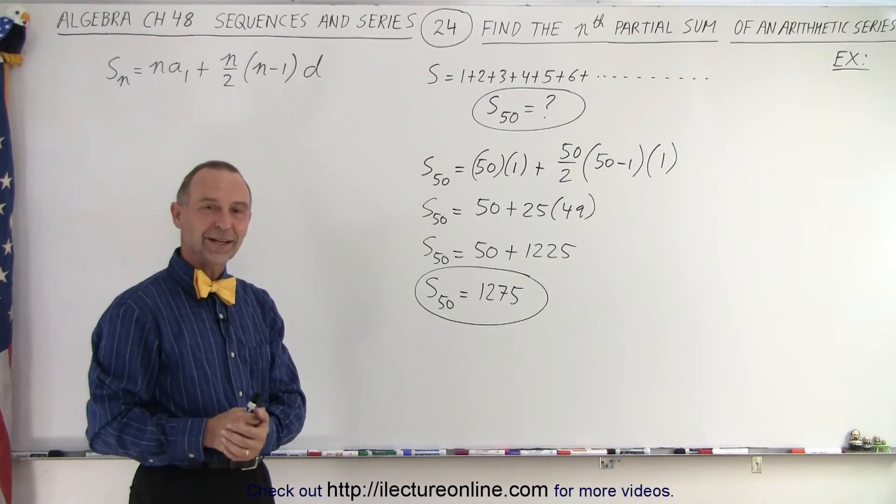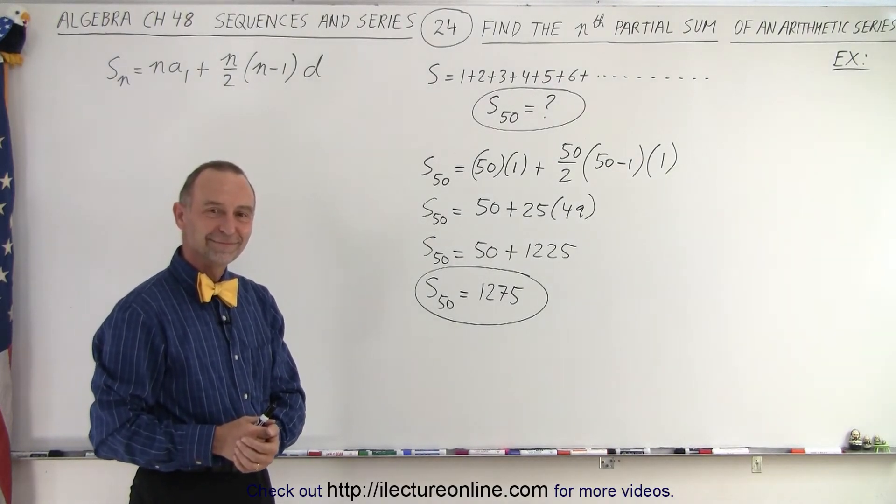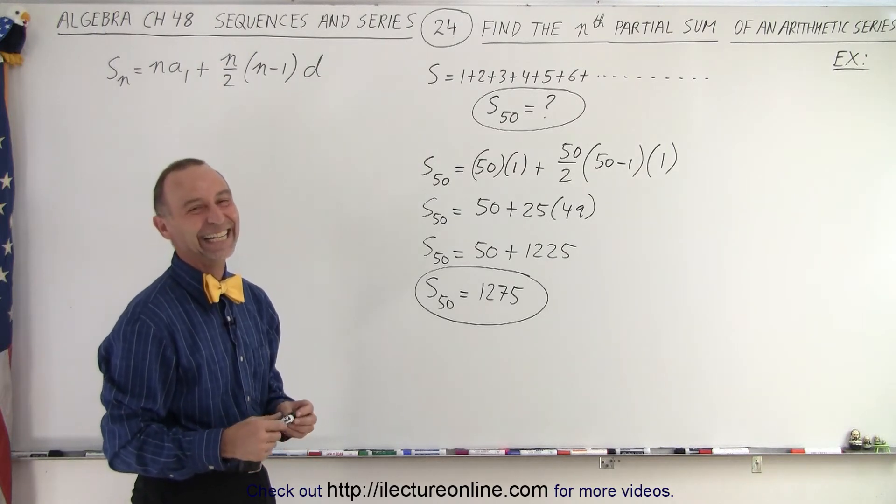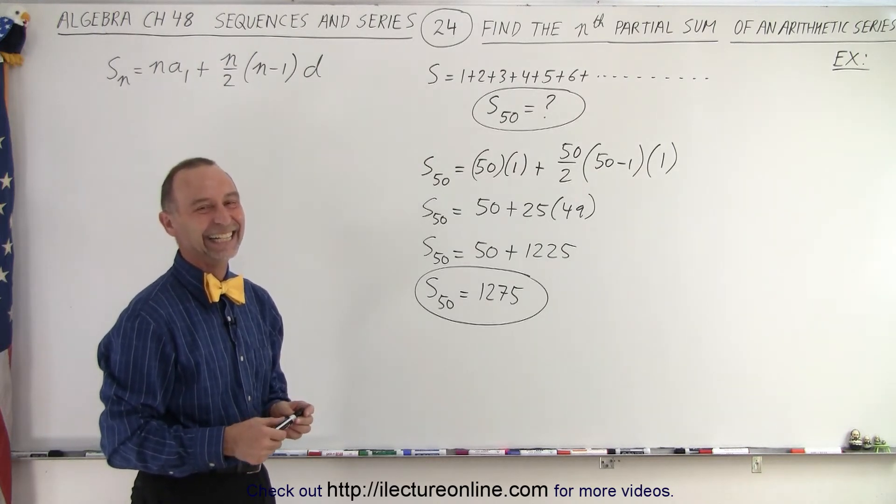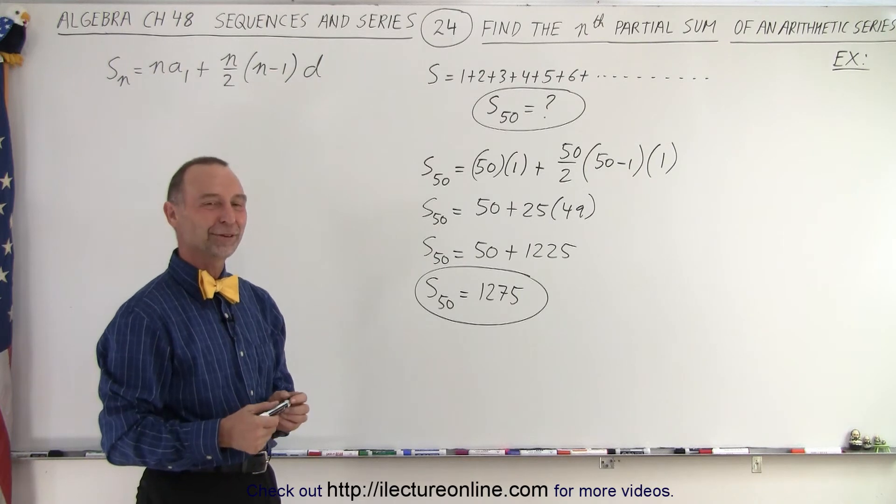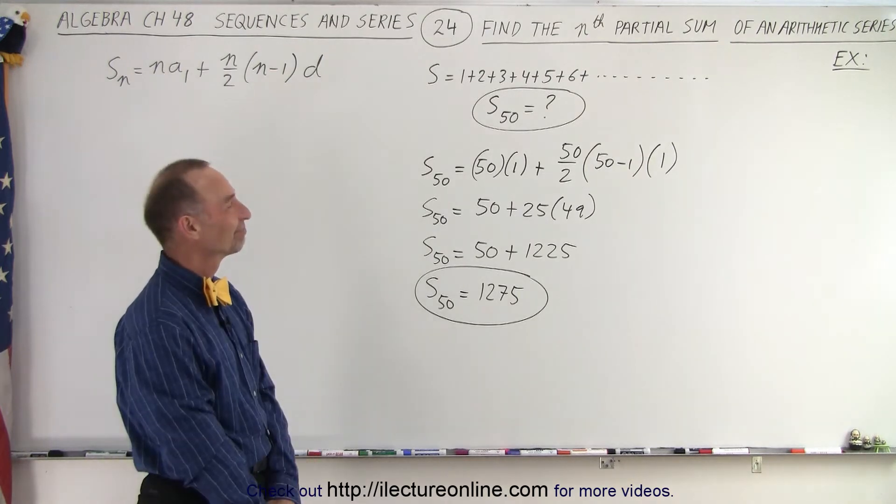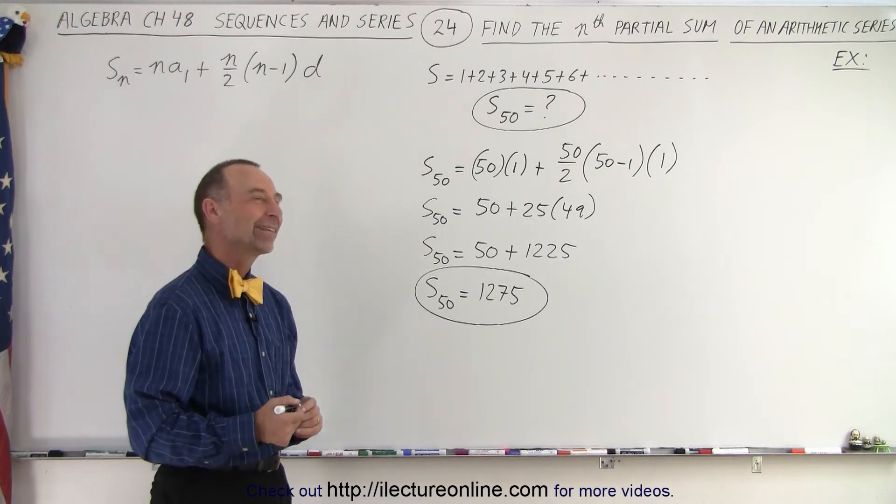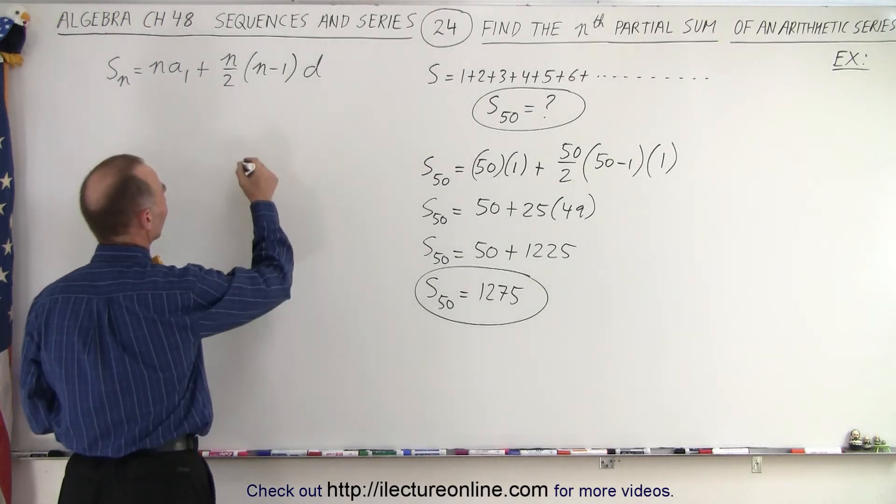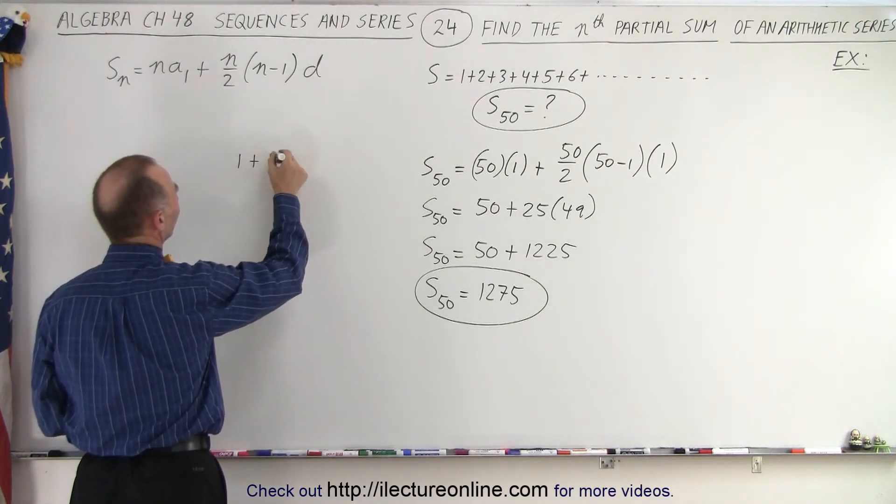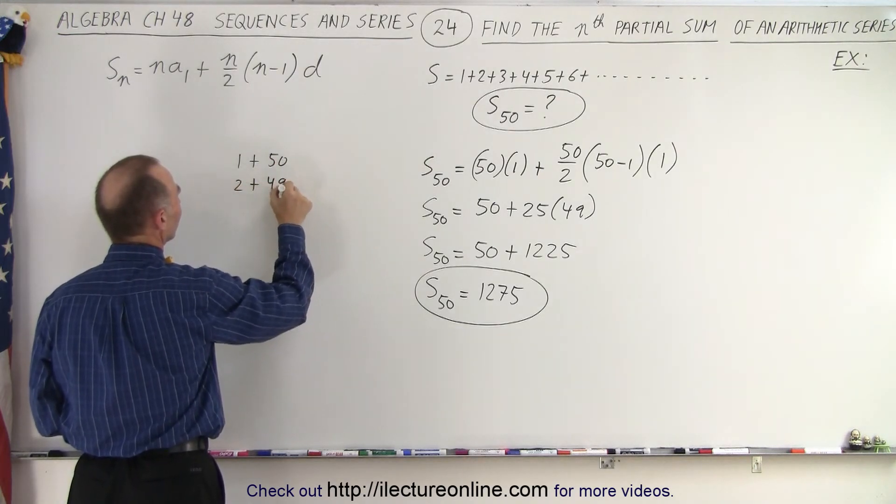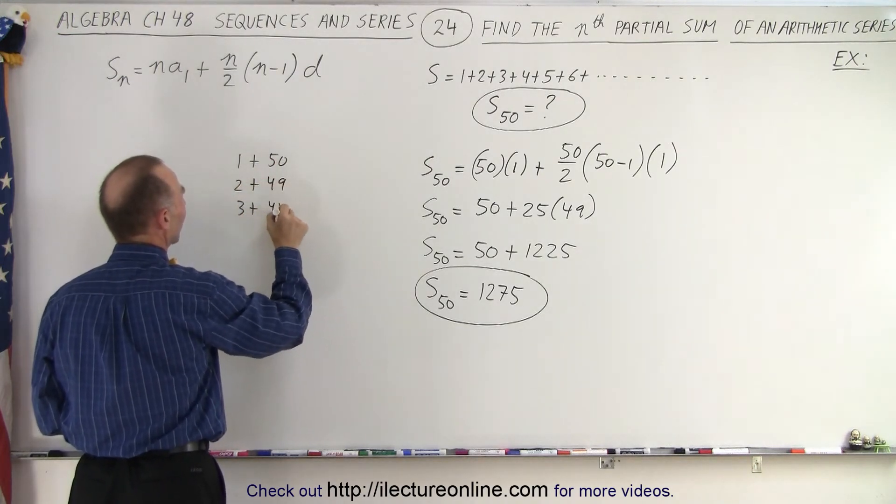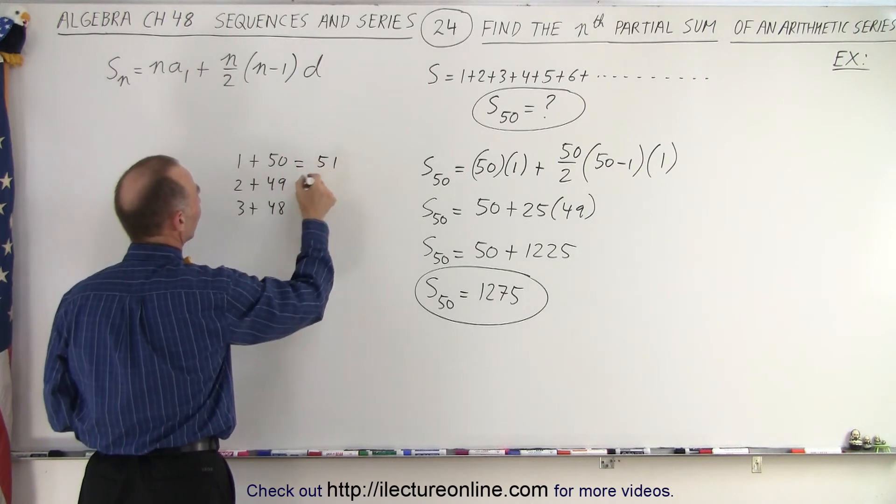Now, how do we check if that's correct? It's like this. If you think about it this way, it would be 1 plus 50, 2 plus 49, 3 plus 48. And in each case, that's equal to 51.